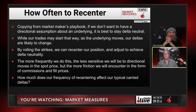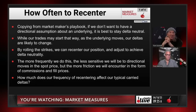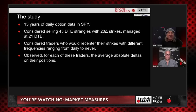So this covers both adjusting and recentering. On a trade that isn't working but is still profitable, it's about three times. We used 15 years of daily SPY option data, considering selling 45-days-to-expiration strangles with 20-delta strikes, managed at 21 days. We looked at traders who would recenter their strikes with different frequencies ranging from daily to never, and observed the average absolute deltas on their positions.